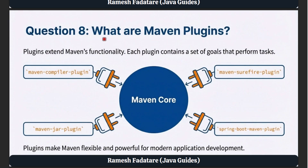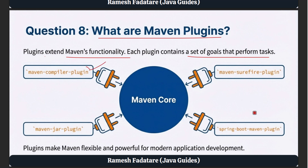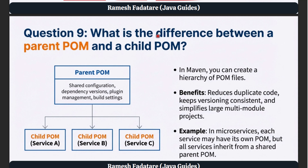Question 8: What are Maven plugins? Plugins extend Maven's functionality. Each plugin contains a set of goals that perform tasks such as compiling code, copying resources, running tests, packaging the project, or deploying to a server. For example, the Maven Compiler Plugin compiles Java code, the Maven Surefire Plugin runs tests, and the Maven JAR Plugin packages your application as a JAR. Spring Boot also provides the Spring Boot Maven Plugin, which adds features like building executable JAR files and running the application directly. Plugins make Maven flexible and powerful for modern application development.